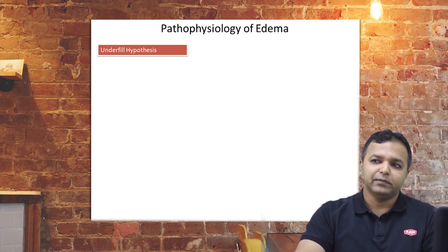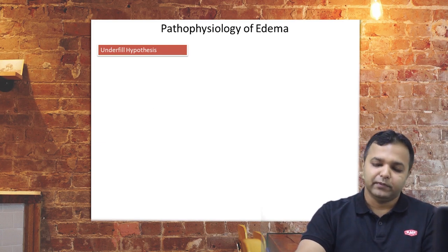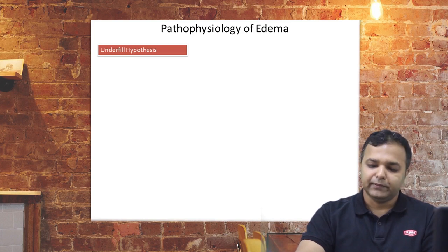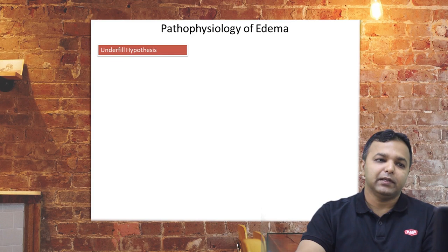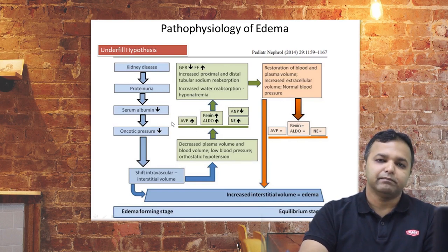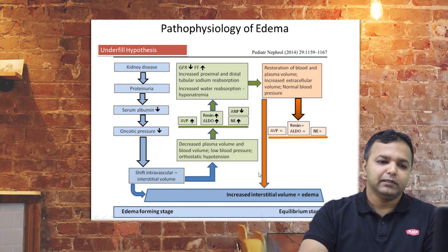Edema is one of the most important and significant manifestations of nephrotic syndrome — it is because of edema that children are brought to the clinician. The initial hypothesis was the underfill hypothesis: because of proteinuria, there is loss of albumin, decrease in oncotic pressure, and a shift of intravascular plasma into the interstitial volume, causing edema. This leads to low plasma volume, decreased GFR, and counter-regulatory mechanisms that increase sodium and water absorption, restoring blood volume — which then leaks again into the interstitial space, continuing the cycle.